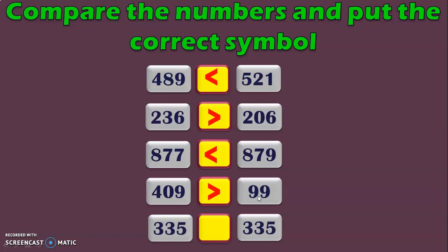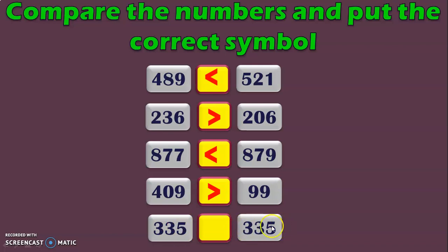One last example to complete this series. We have 335 to be compared with 335. Here the hundreds place, tens place and ones place are all the same number in both given numbers. So the symbol to use here is the equal to symbol.